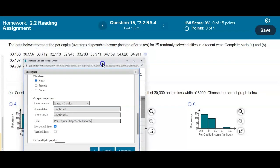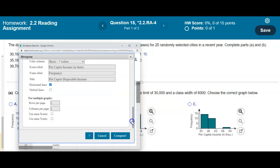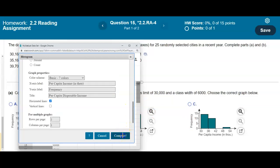And we can go ahead and put that in there. And then the x-axis is going to be the per capita income, which is in thousands. And then the y-axis is going to be the frequency. And then the next thing we want to do is just select compute.